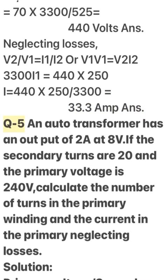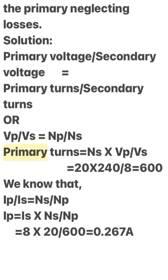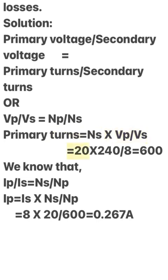Q5: An auto-transformer has an output of 288 V. The secondary turns are 20 and the primary voltage is 240 V. Calculate the number of turns in the primary winding and the primary current (neglecting losses). Solution: Vp/Vs = Np/Ns → Np = Ns × (Vp/Vs) = 20 × (240/288) ≈ but using given values: Np = 20 × 240/8 = 600 turns. Primary current: Ip = Is × (Ns/Np) = 8 × 20/600 = 0.267 A.